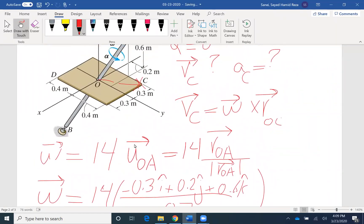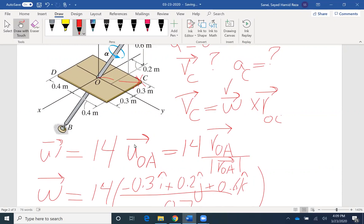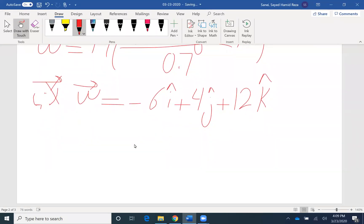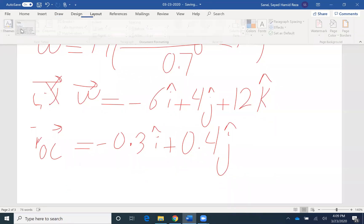And if I go back to my equation, velocity is omega cross ROC. Now I have omega, I need to find ROC, which would be the position vector from O to C. The position vector ROC would be negative 0.3 because I'm moving from O to C in negative x direction, so that would be ROC as the i component. And positive 0.4j, and that's r. So now that I have omega and ROC, I can find my velocity.